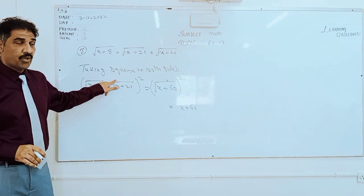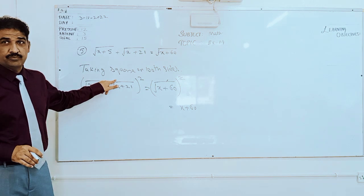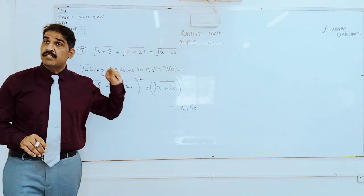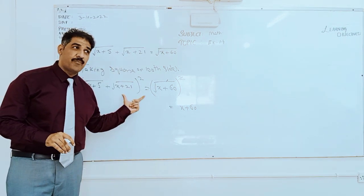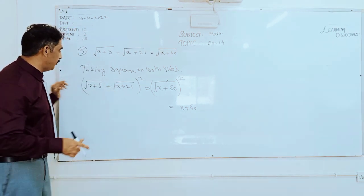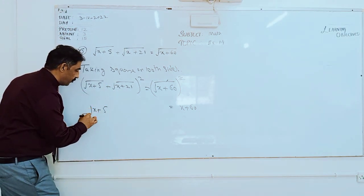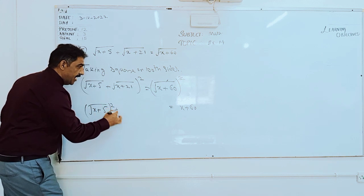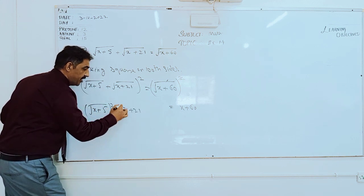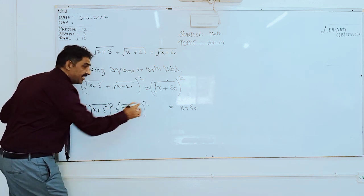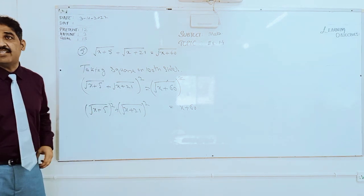Here we can do that? No. Then what should we do? We should separate. Separate how? Individually. You want to say like this: √(x+5) whole square plus √(x+21) whole square. Yes. There is one mistake here.